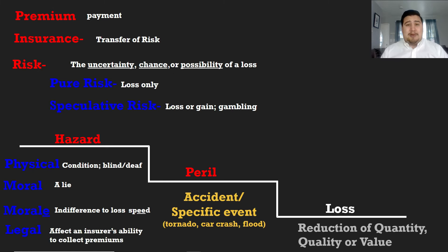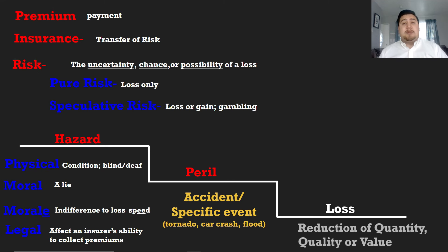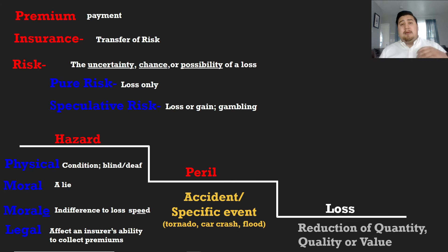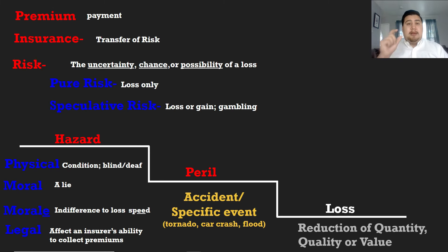The last type of hazard is legal hazard. This has more to do with you as an agent, representative, or producer — it has to do with money not going where it's supposed to go. Let's say a client gives you money for a policy, an initial premium, or a down payment, and you use it for something they didn't ask for — a different product or personal use. That's going to cause a legal hazard because there will be legal repercussions. This one is barely starting to come up on some exams, but when you see legal hazard, think of the word money — it always has to do with money not going where it's supposed to.